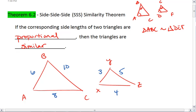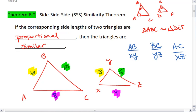What we can see is that AB to XY, so AB to XY, BC to YZ, and AC to XZ are all in the same ratio,